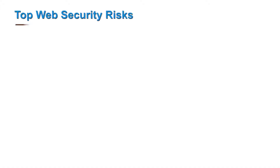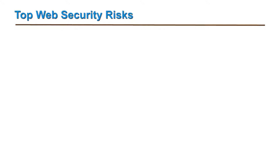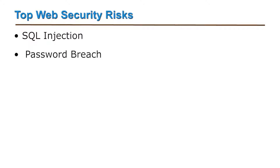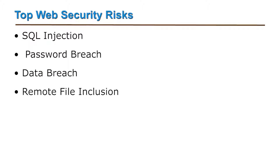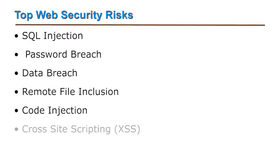There are some more web security risks. A report identifies the top web security risks on the basis of their severity. First, SQL injection. Second, password breach. Third, data breach. Fourth, remote file inclusion. Fifth, code injection. Sixth, cross-site scripting.